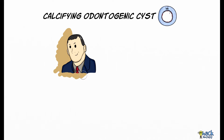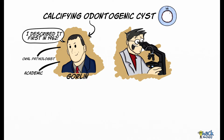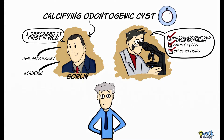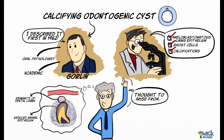Calcifying Odontogenic Cyst was first described by Gorlin in 1962. It is a cystic lesion which histologically shows an ameloblastomatous lining along with ghost cells and focal calcifications. It is thought to arise from the reduced enamel epithelium surrounding the unerupted crown or from the remnants of the dental lamina.